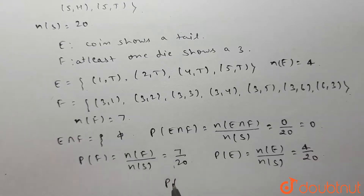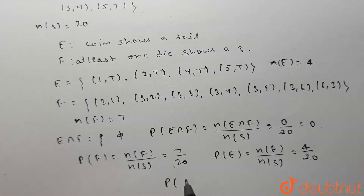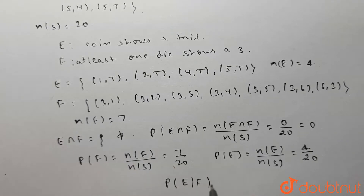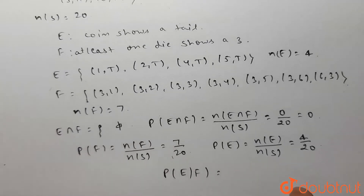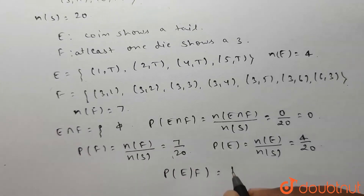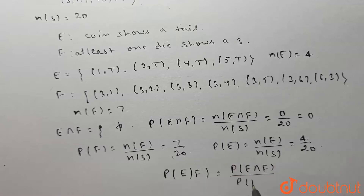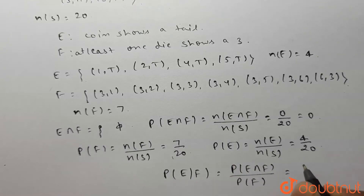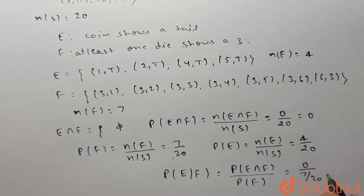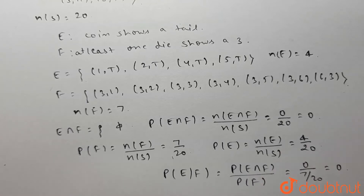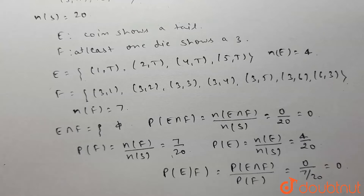We need to find the conditional probability that the coin shows a tail given that at least one die shows a three — that is, probability of E given F. This equals probability of E intersection F divided by probability of F, which equals zero divided by seven-twentieths, which equals zero. So the answer is zero.